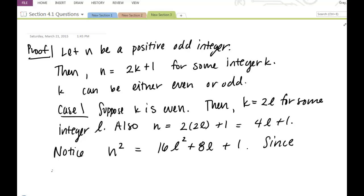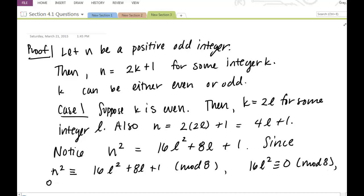Since n squared is congruent to 16l squared plus 8l plus 1 mod 8. 16l squared is congruent to 0 mod 8. And we have 8l is congruent to 0 mod 8. We have n squared is congruent to 1 mod 8.